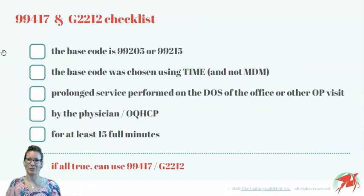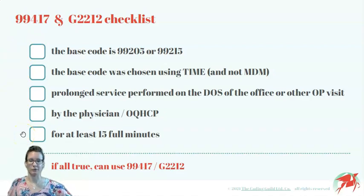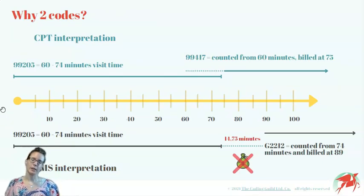Here is the same information in a more coder-friendly format. If you can answer yes to all of these questions on the checklist, then you are good to use 99417 or G2212 based on payer. Before we look at documentation requirements for time, let's quickly address why we have two new codes for prolonged services when they are so very similar.